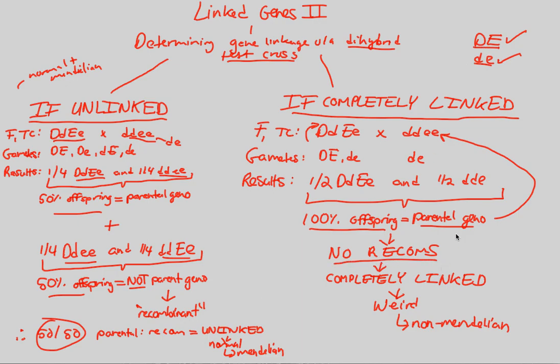There's no recombination possible. You can't mix and match these in any way, shape, or form like we did with unlinked genes, simply because they are completely linked.